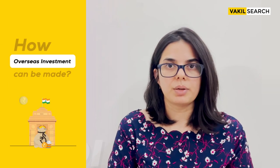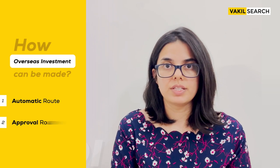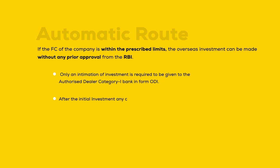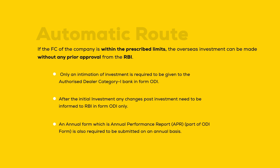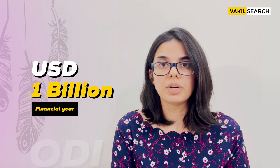Overseas investment can be made via two routes: automatic route and government route. Under the automatic route, if your financial commitment is within the prescribed limit, no government approval is required — post-facto information is to be provided to the authorized dealer bank via form ODI. Once ODI formalities are done, an Annual Performance Report (APR) must be filed every year. Under the government approval route, if your investment exceeds USD 1 billion in a financial year — irrespective of whether it is still below 400% of net worth — you must obtain government approval.